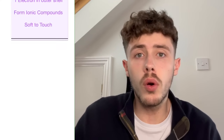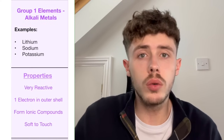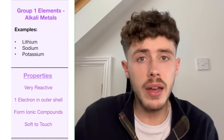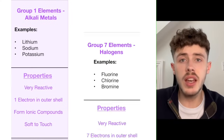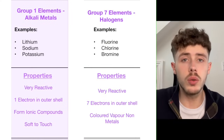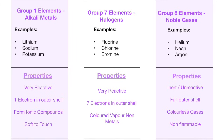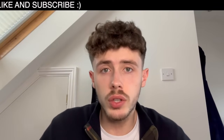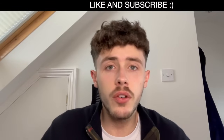Group 1 elements are called the alkali metals, group 7 elements are called the halogens, and group 0 — or group 8, as some people call it — are the noble gases. You could be tested on any of those names. The rest of the topics are a lot shorter than that, so stay with me till the end if you want to be exam ready.